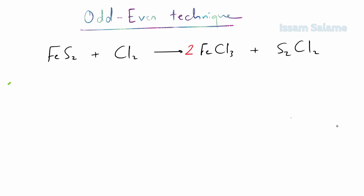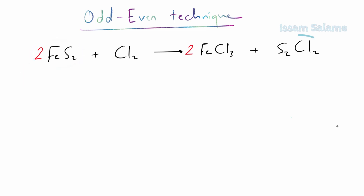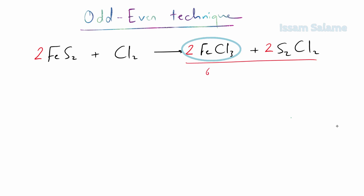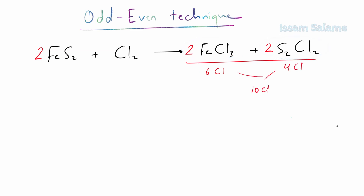We multiply the odd side by 2 to make it even, then continue balancing. Since we multiplied by 2, we balance the iron atoms by multiplying the left side by 2. Now we have four sulfur atoms on the left, so multiply the sulfur dichloride on the right by 2 to balance sulfur. Finally, we count the chlorine atoms on the right: six in the first compound and four in the second, giving a total of 10. On the left we have only 2, so multiply by 5, and the reaction is balanced.